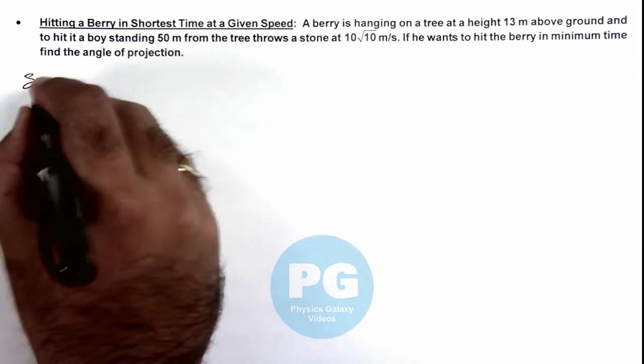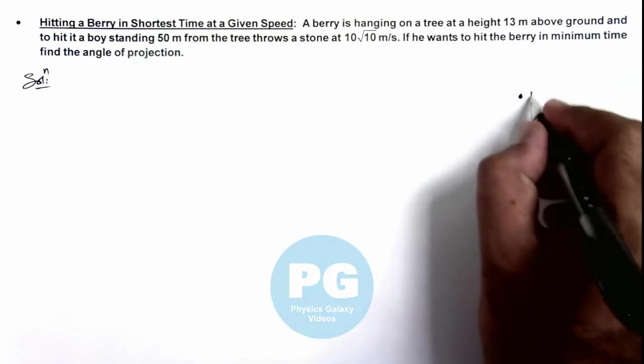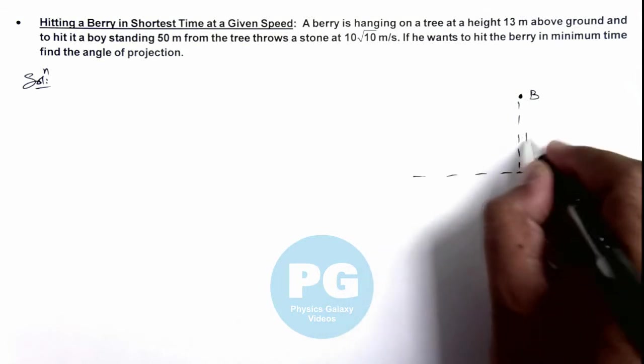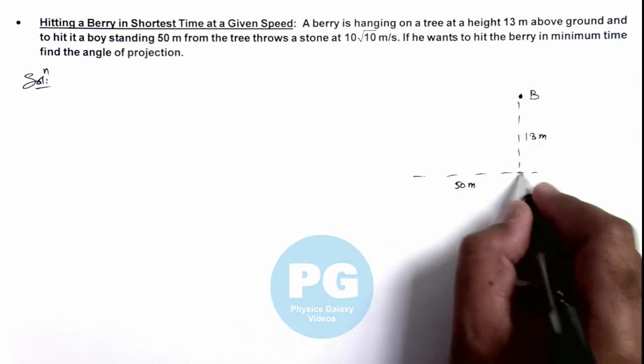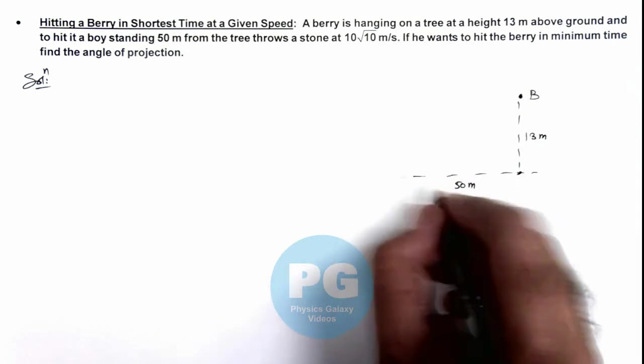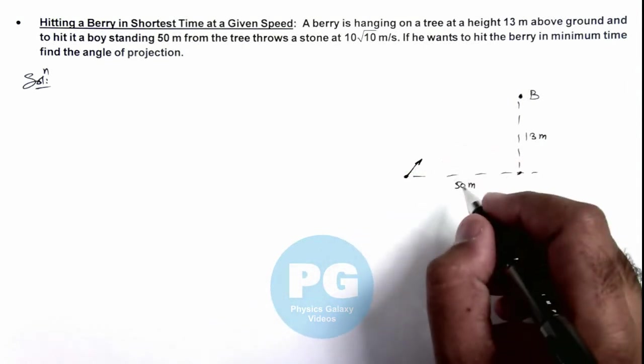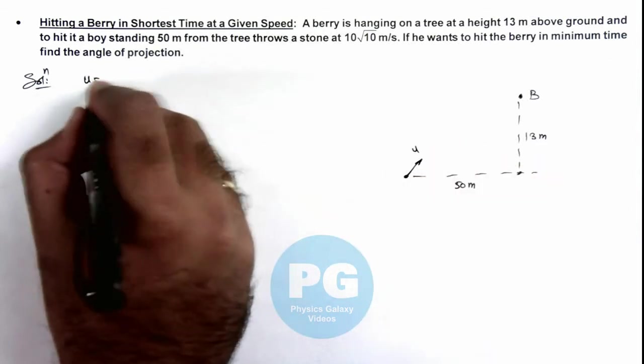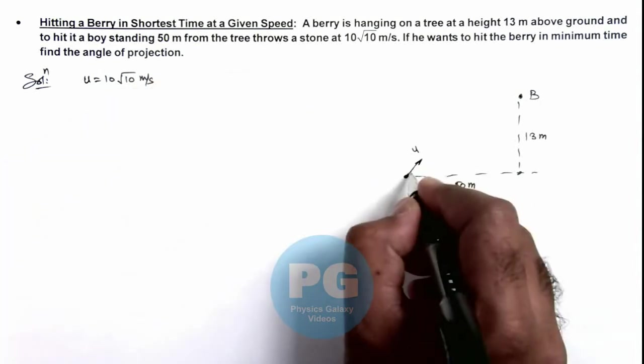If we draw the situation here we can see, say this is the berry B, which is at a height 13 meters above the ground and at a distance 50 meters from the berry. At a horizontal distance, a boy is throwing a ball with an initial speed u, and u is given as 10 root 10 meters per second, at an angle of projection theta.